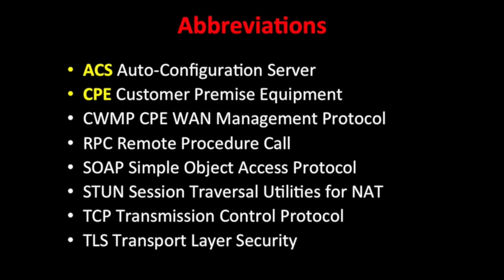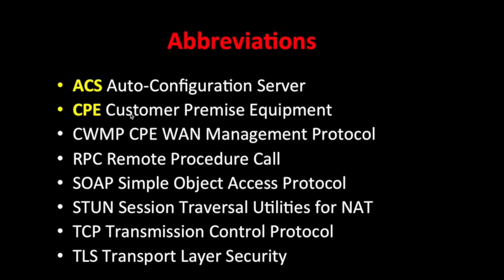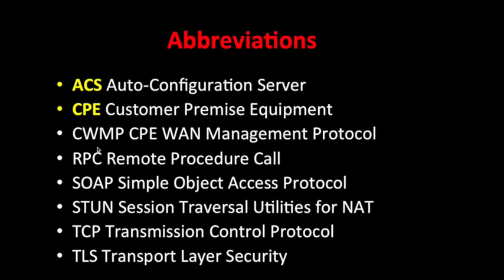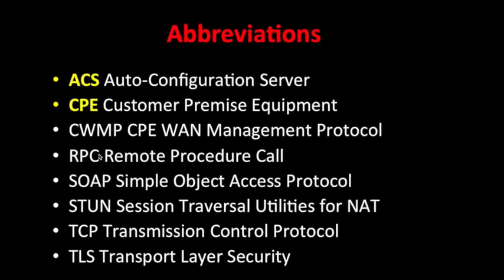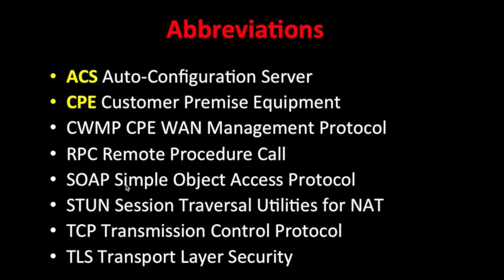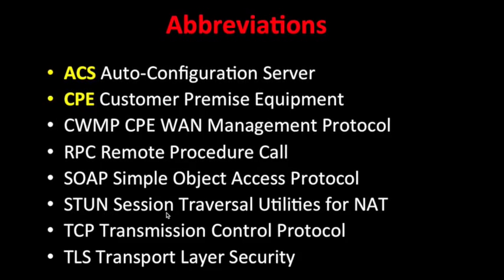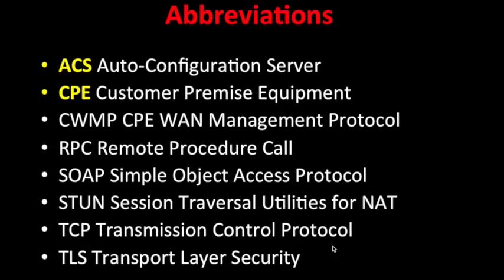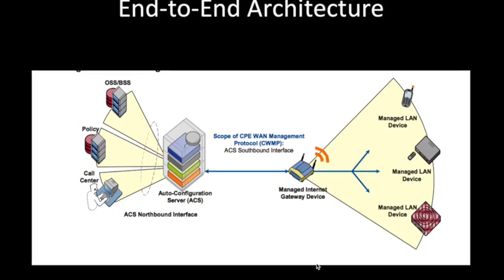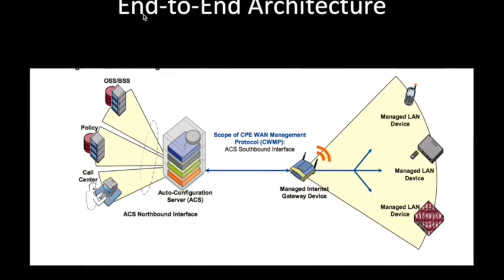Before explaining what TR-069 is, let's go over a few abbreviations. ACS stands for Auto Configuration Server, CPE stands for Customer Premises Equipment, CWMP is the CPE WAN Management Protocol, RPC is Remote Procedure Call, SOAP/XML is Simple Object Access Protocol, STUN is Session Traversal Utilities for NAT, TCP is Transmission Control Protocol, and TLS is Transport Layer Security.